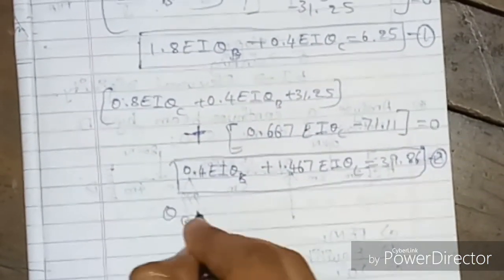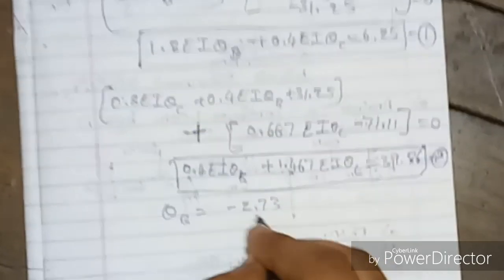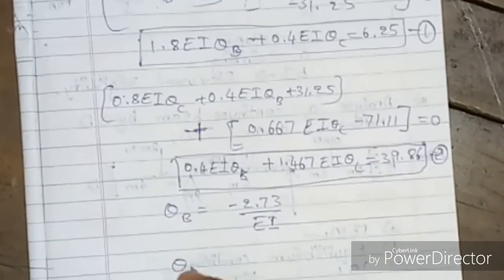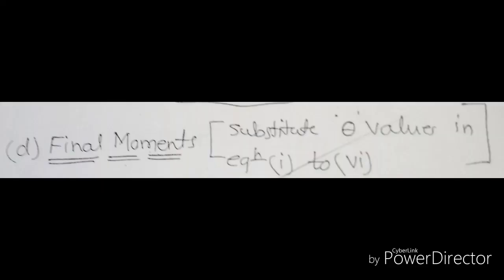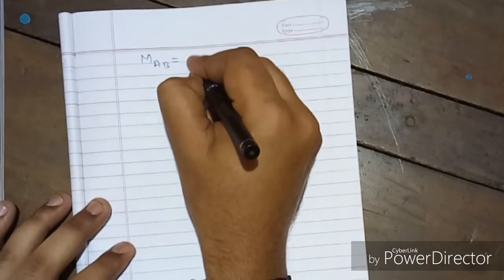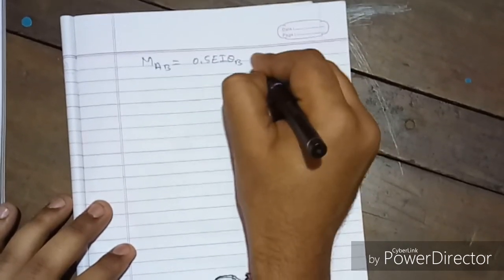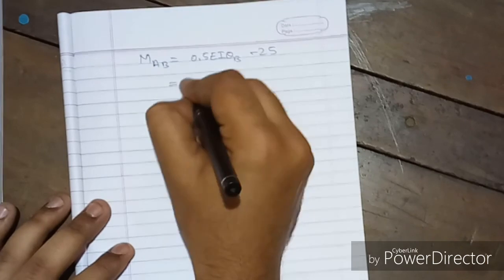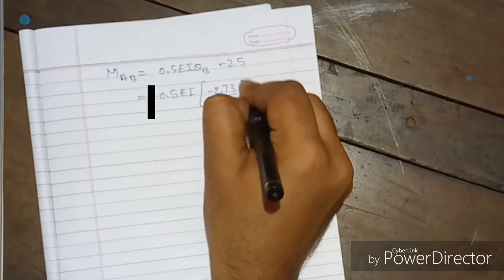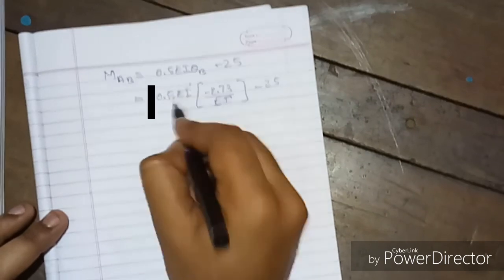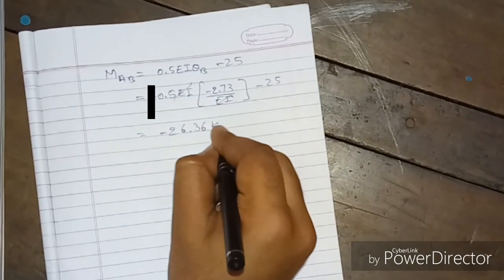Solving equations (1) and (2) simultaneously, we get θ_B = −2.73/EI and θ_C = +27.91/EI. Now to find the final moments, substitute θ_B and θ_C into each moment equation. For M_AB: substituting θ_B = −2.73/EI into the M_AB expression, EI cancels and we get M_AB = −26.36 kN·m.